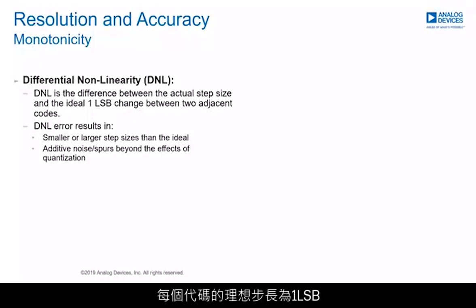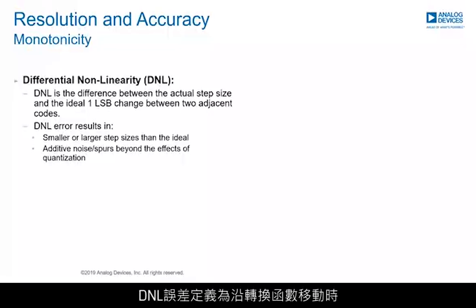The ideal step size for each code is 1 LSB, but in practice, its step size differs from its neighbors. A DNL error is defined as the difference between the ideal 1 LSB step and the actual real step as one moves along the transfer function.